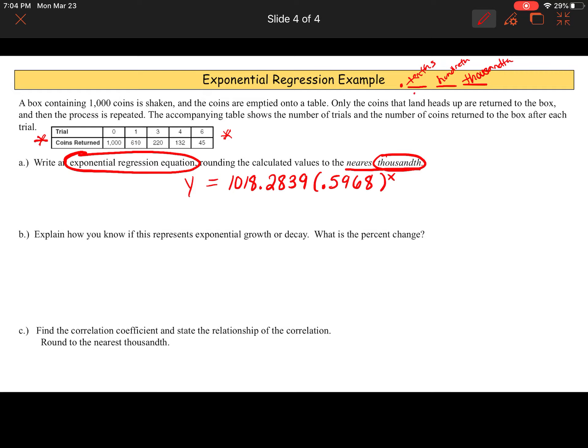Now, it wants it to the nearest thousandth. So, three decimal places in. One, two, three. Thousandth. So, I'm going to go and I count after the decimal. One, two, three. I ask myself, five or above? Give this number a shove. So, because nine is above five, we make the three a four. We shove that number up one. So, it becomes 1018.284 times. Now, we're going to do the same thing. Let's round. One, two, three. If this number is five or above, we give this number a shove. So, eight is above five. So, we shove this number up one. Six plus one is seven. So, 0.597 to the X power. There's your equation. This is your exponential regression equation. We've answered the question.